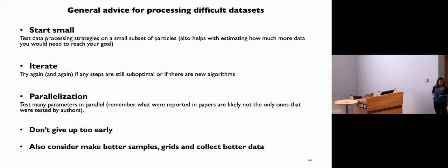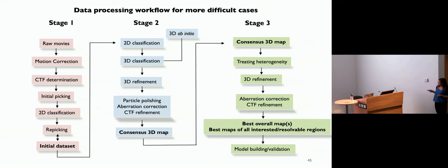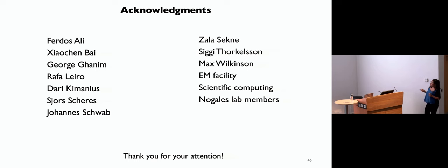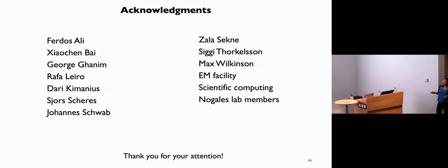Don't give up too early, because things might change as you try different approaches. But if all else does not work, consider making a better sample, better grid, and collecting better data — you can go back to previous lectures for information on how to do this. So with that, I will leave with the summary slides. This afternoon Paul will talk more about what happens when you get your maps and do model building. I'd like to thank a lot of people who provided materials for my talk: Ferdos, Rafa, Shor, Zala and George, Siggy, and Max — and the people in Shor's lab who over the years taught me image processing and had many good discussions about dealing with these problems. And all the Nogales lab members, and our unsung heroes: the EM facility and scientific computing for all of this support. Thank you for your attention.